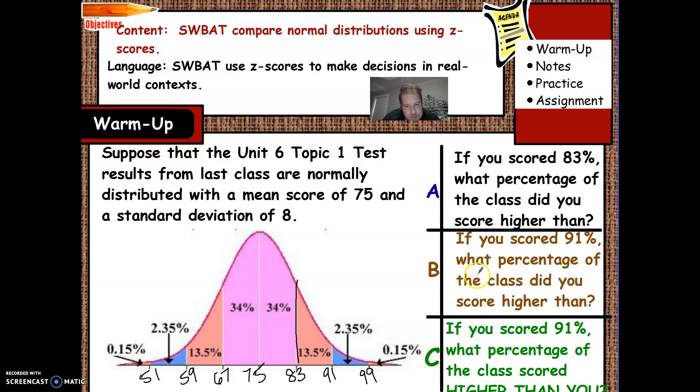If you scored 91%, what percentage of the class did you score higher than? So 91 is right here. So that's the same 84% that you beat here, but you also beat this 13.5%. So you add 13.5% more, and then you get 97.5% is the answer for B.